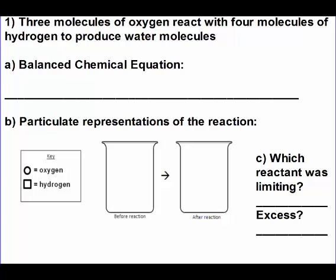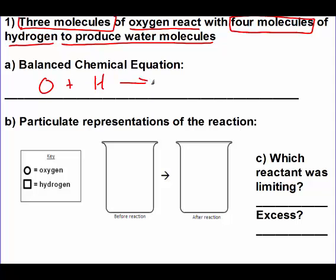Our first example says that we have three molecules of oxygen reacting with four molecules of hydrogen to produce water molecules. So we have oxygen reacting with hydrogen to produce water. The three molecules and the four molecules are telling us how many we have. That does not go in the balanced equation. Make sure that you're careful because oxygen and hydrogen cannot be by themselves. So we write a proper equation and then we can balance it. To balance this one, we'll need two hydrogens and two waters.